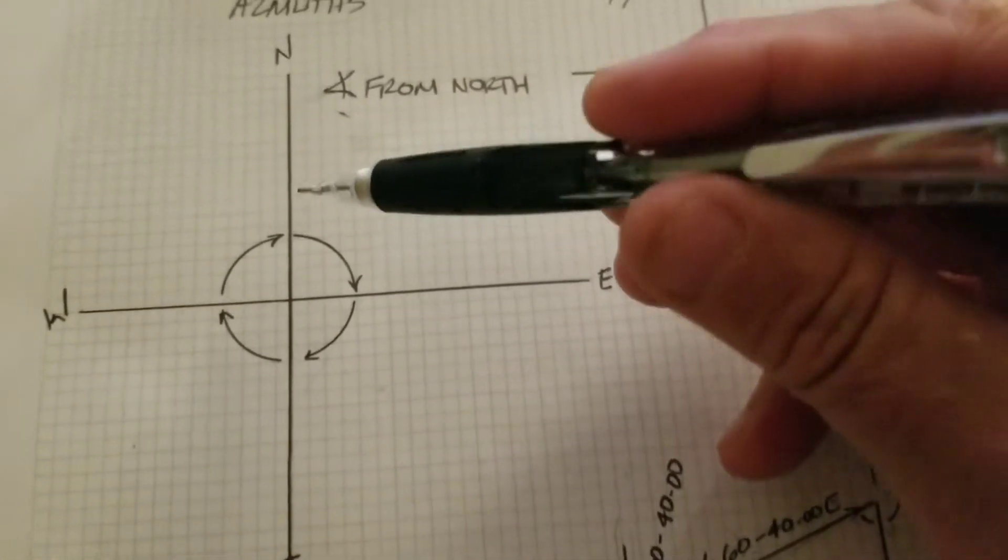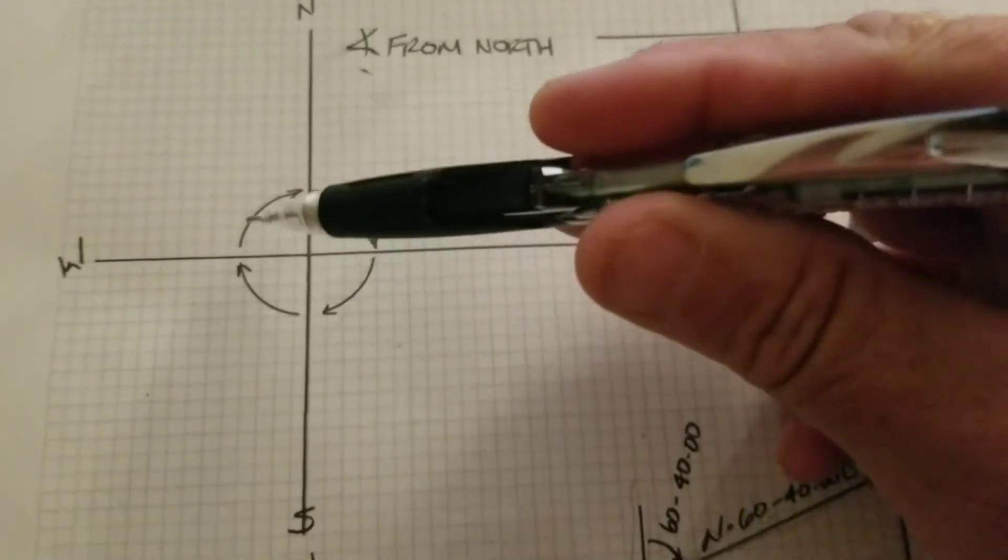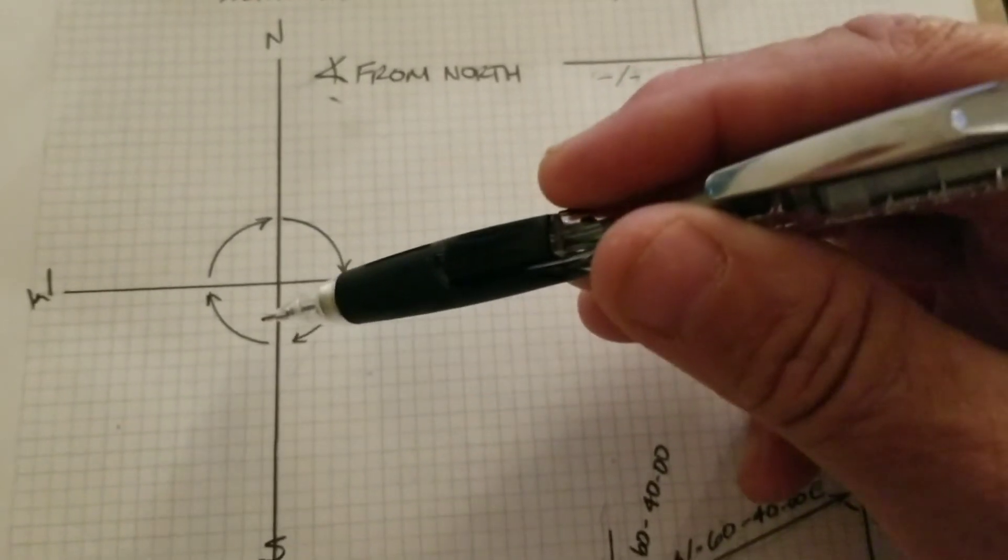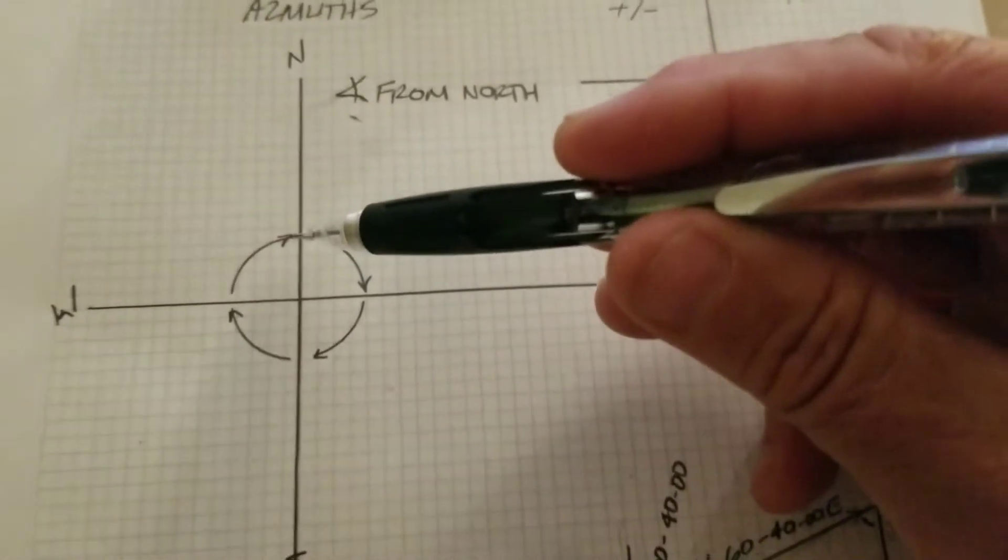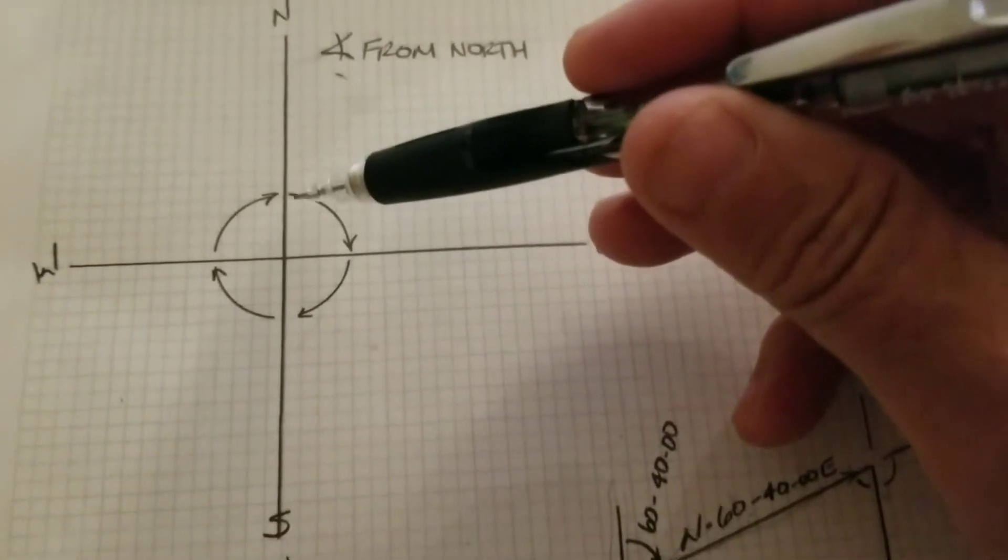So this line here, this was north, this line here would be 90. A 180 degree azimuth would be a south line and so on and so forth. So an azimuth can be anywhere from zero to 360 degrees or 359 degrees, 59 minutes, 59 seconds. But it's all based off north.